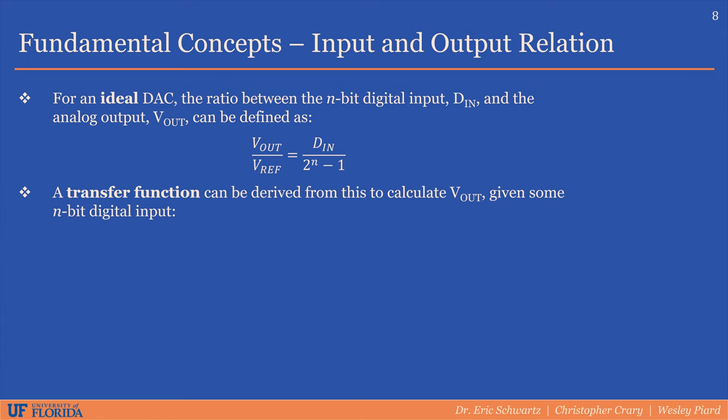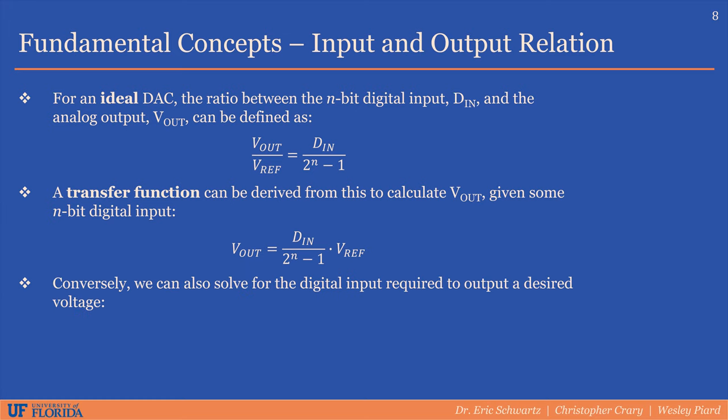We can use this ratio to derive what is called the transfer function, which gives us the analog output voltage as a function of the digital input. Conversely, we can solve for the digital input value required to output a certain voltage.